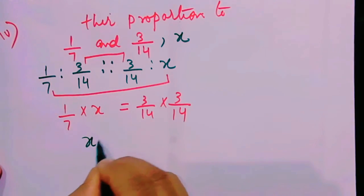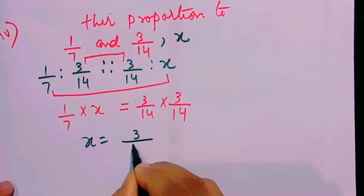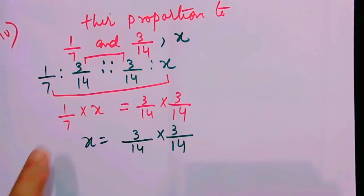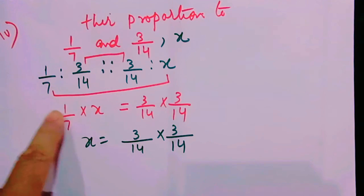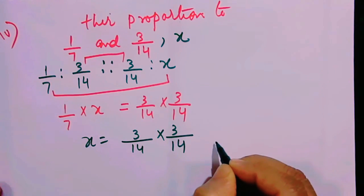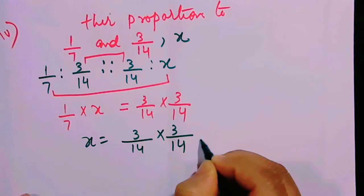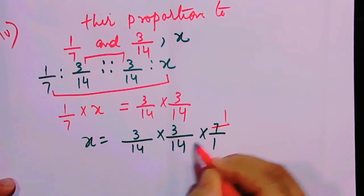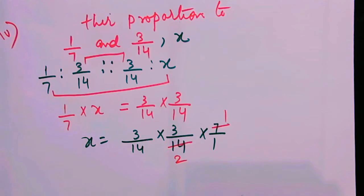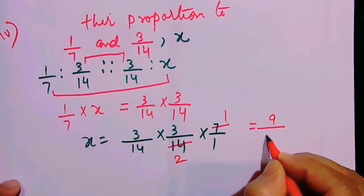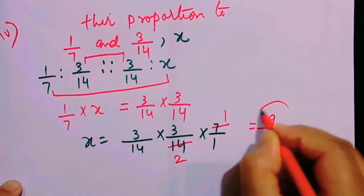How are you going to find x? This how will become wow! When 1 by 7 goes to the other side, it is divided by 1 by 7, which means multiplied by 7 by 1. Now let's cancel: 7 one time, 7 two times. So 3 times 3 is 9, giving x equal to 9 by 28.